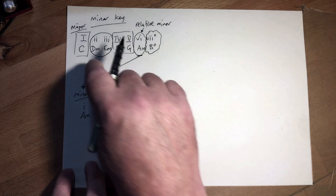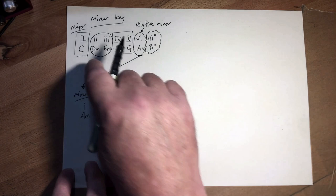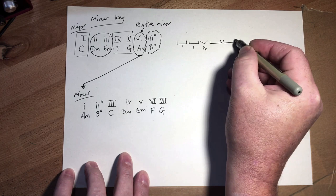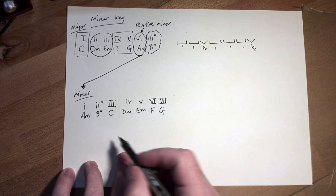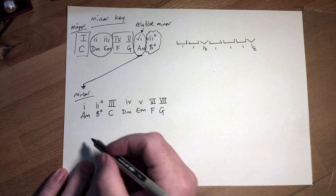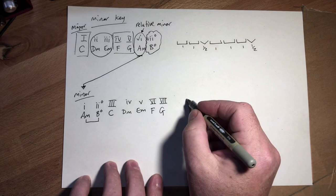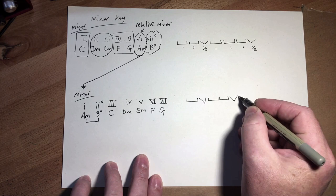When I talked about the major key before, we looked at it from this pattern: step, step, half step, step, step, step, half step. Now what happens is this all changes when we move down here. A minor becomes the first one, so between A minor and the B we get a step. This is how I learnt it — I'm very visual — and I called this 'bulldog's teeth'.